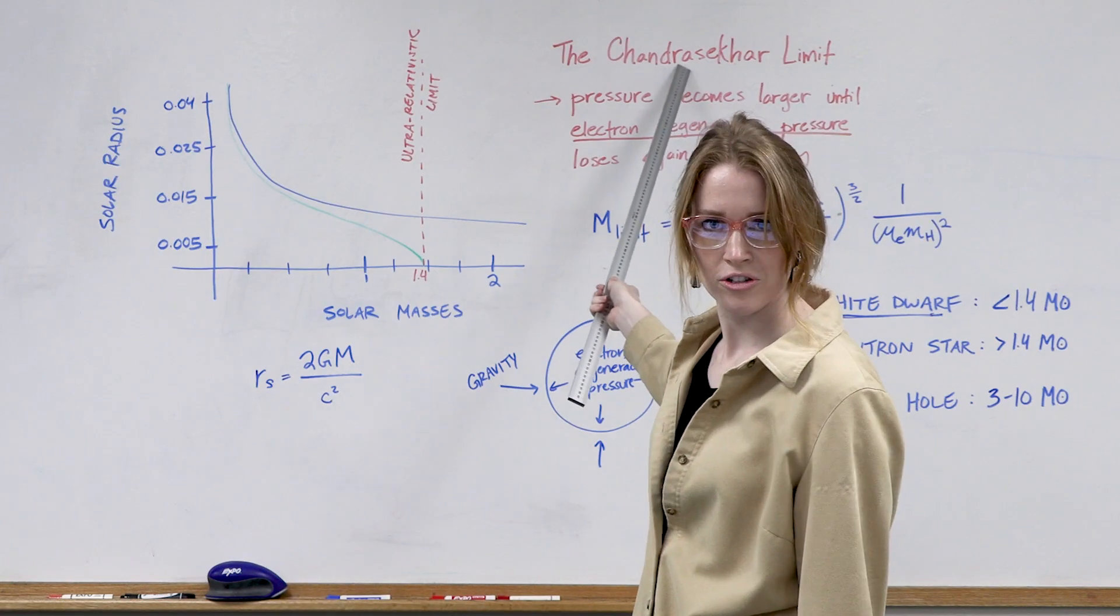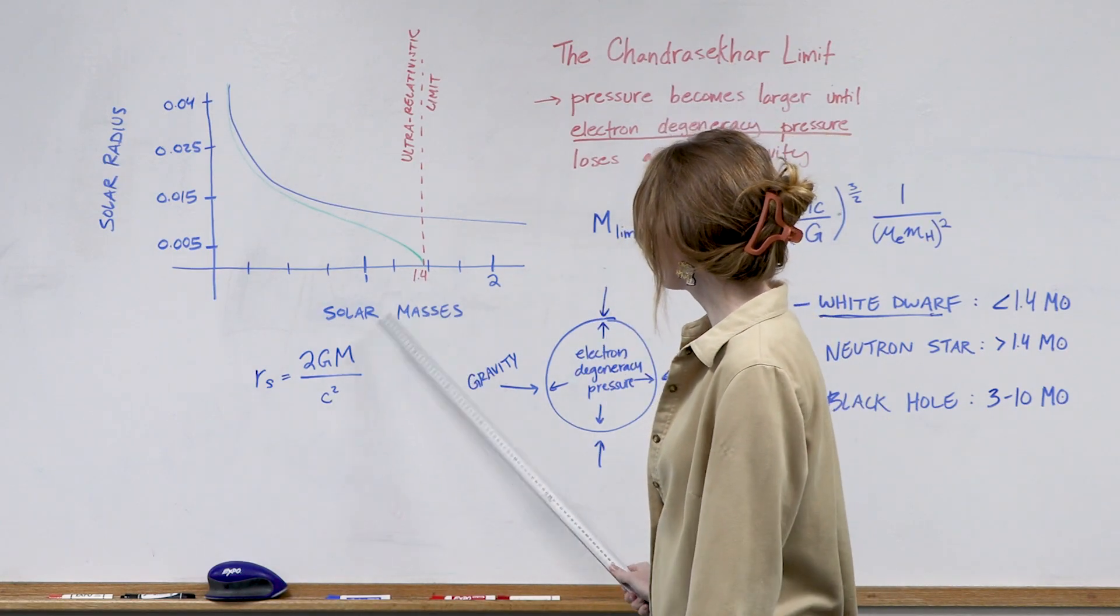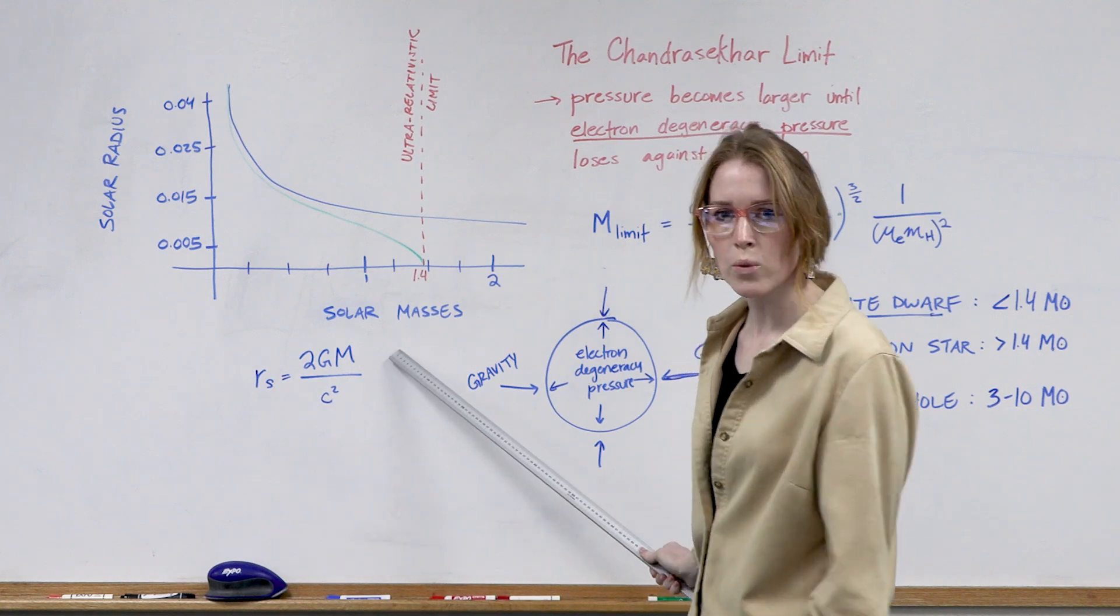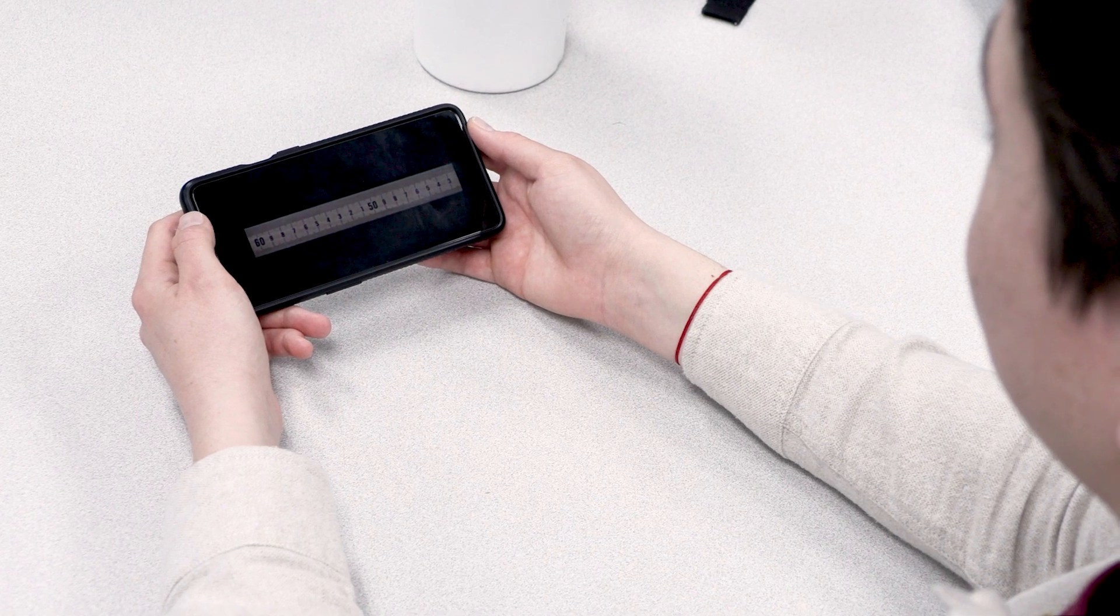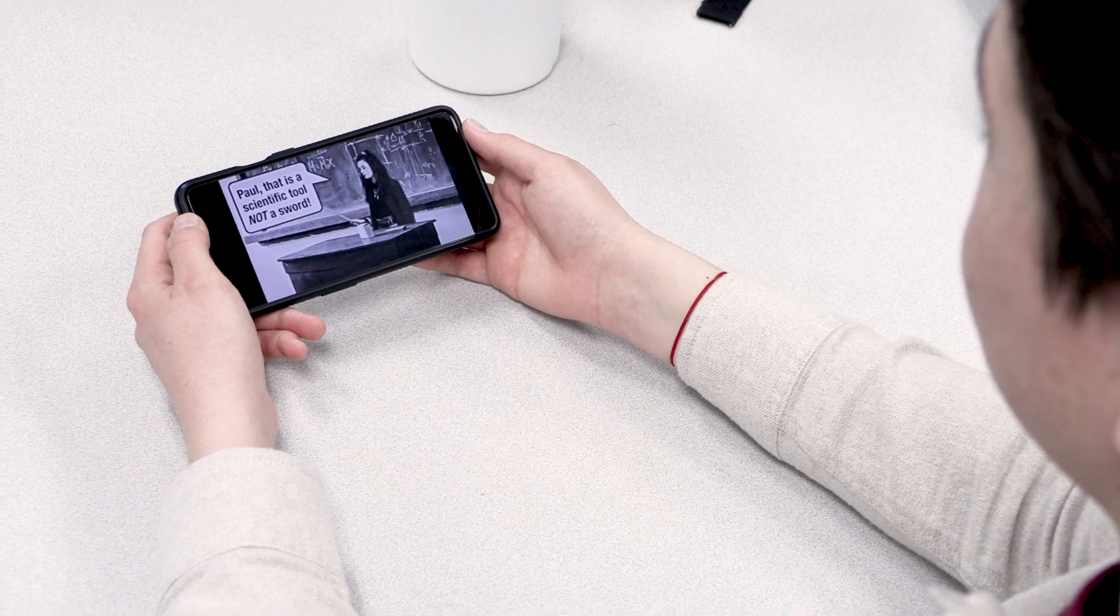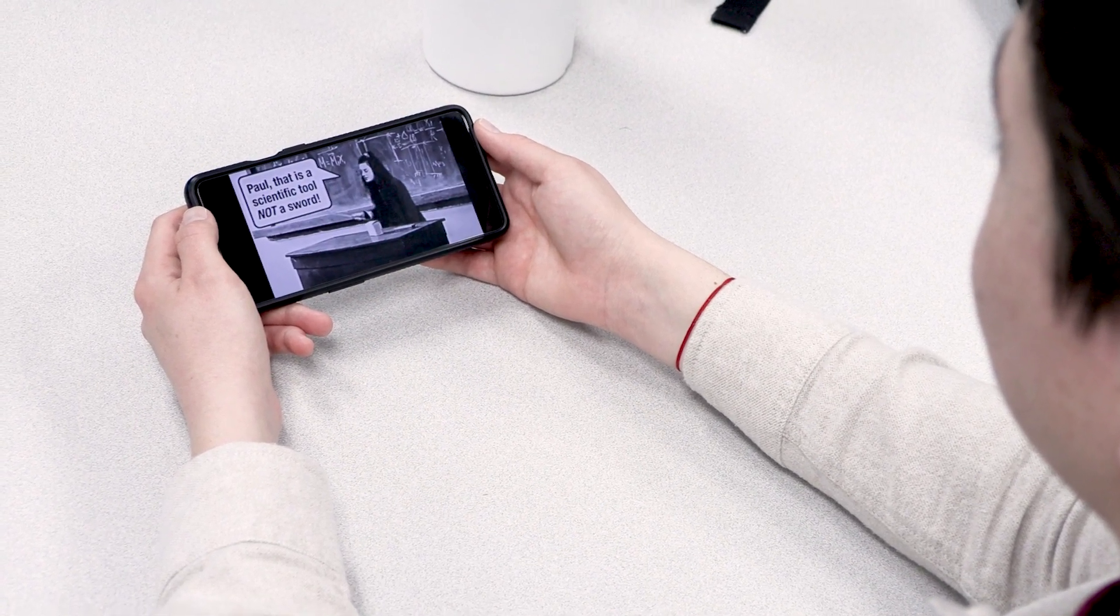All right, so below the Chandrasekhar limit of 1.4 solar masses, what we end up with is a white dwarf, because the gravity cannot overcome this electron degeneracy pressure, which is pushing out and maintaining a star shape.